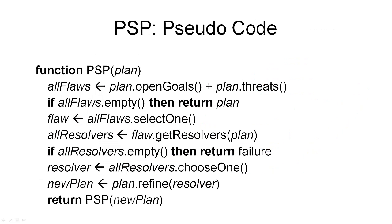Here is what I've just described in pseudocode. We define the function PSP that takes a partial plan as input. The procedure then refines this plan into a solution plan. Note that there is no planning problem given as input — that is because initially, the plan given to this procedure is the empty plan, which encodes the planning problem as it has the dummy steps in it, encoding the initial state and the goal. Then the first thing we do is compute all the flaws that are currently in the plan. There are two types of flaws: the open goals — the preconditions that are currently unsatisfied — and the threats that exist within the current plan. If this set of flaws is empty, that means we have reached a solution plan, because no flaws means a solution.